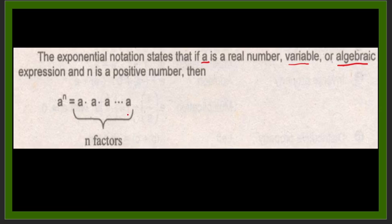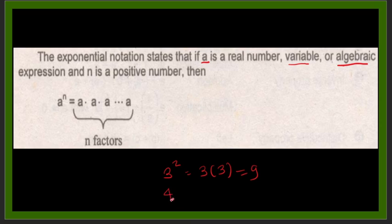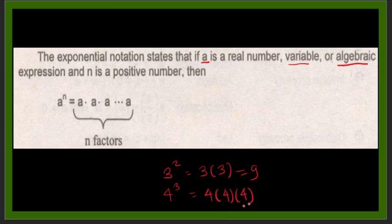For example, 3 squared means 3 times 3, which equals 9. Another example: 4 cubed, or 4 raised to the power of 3, means 4 times 4 times 4. That is 16 times 4, which equals 64.